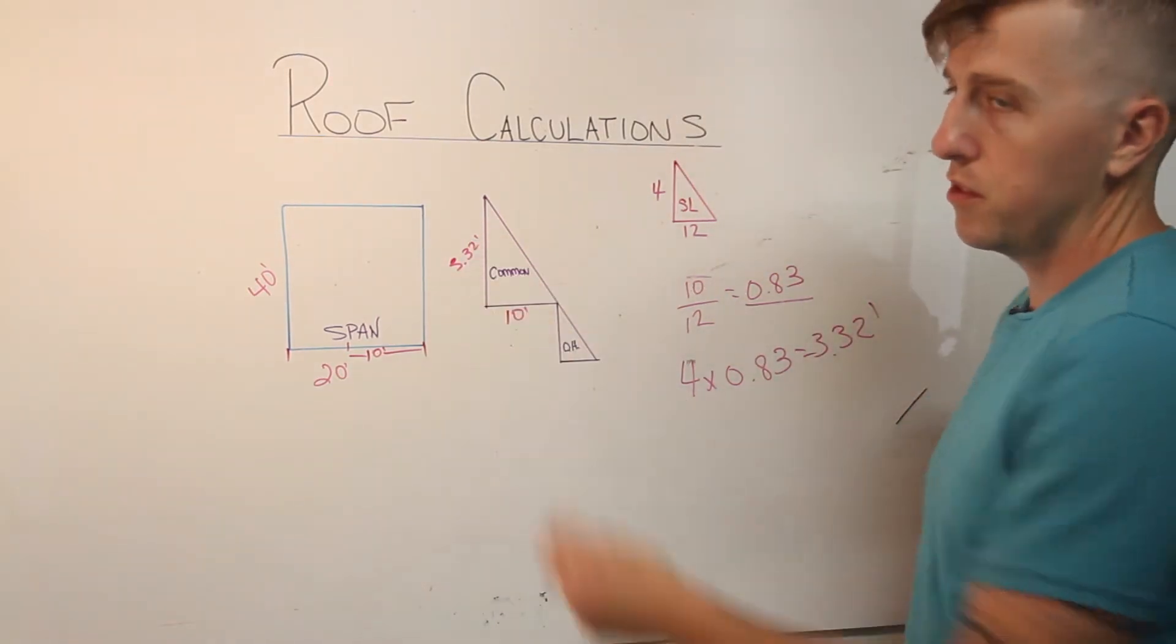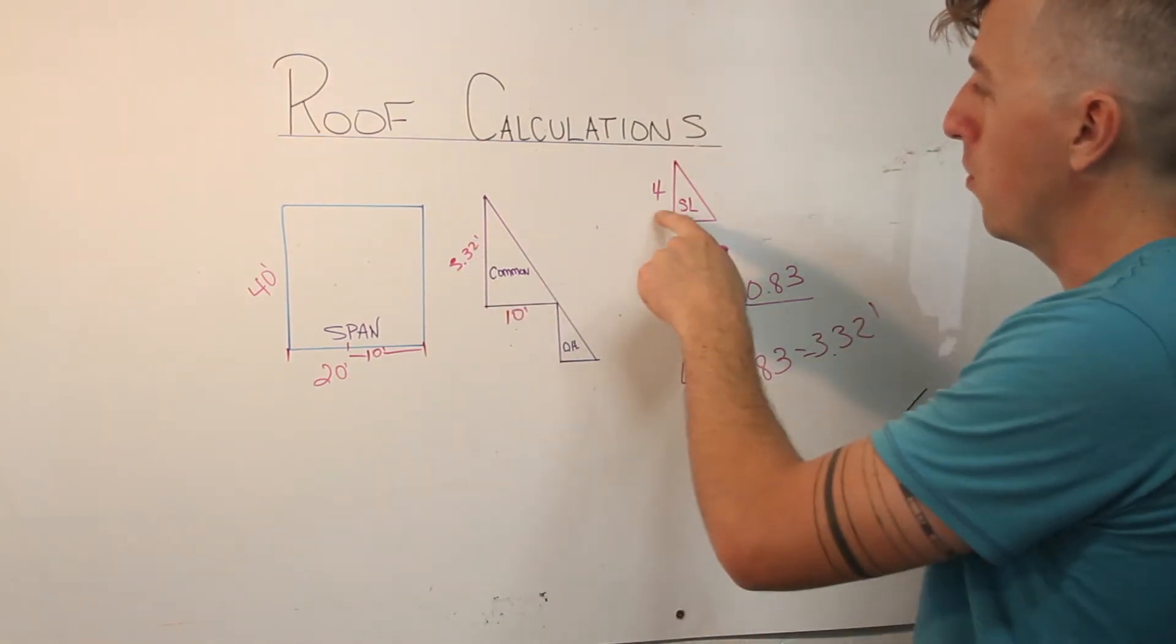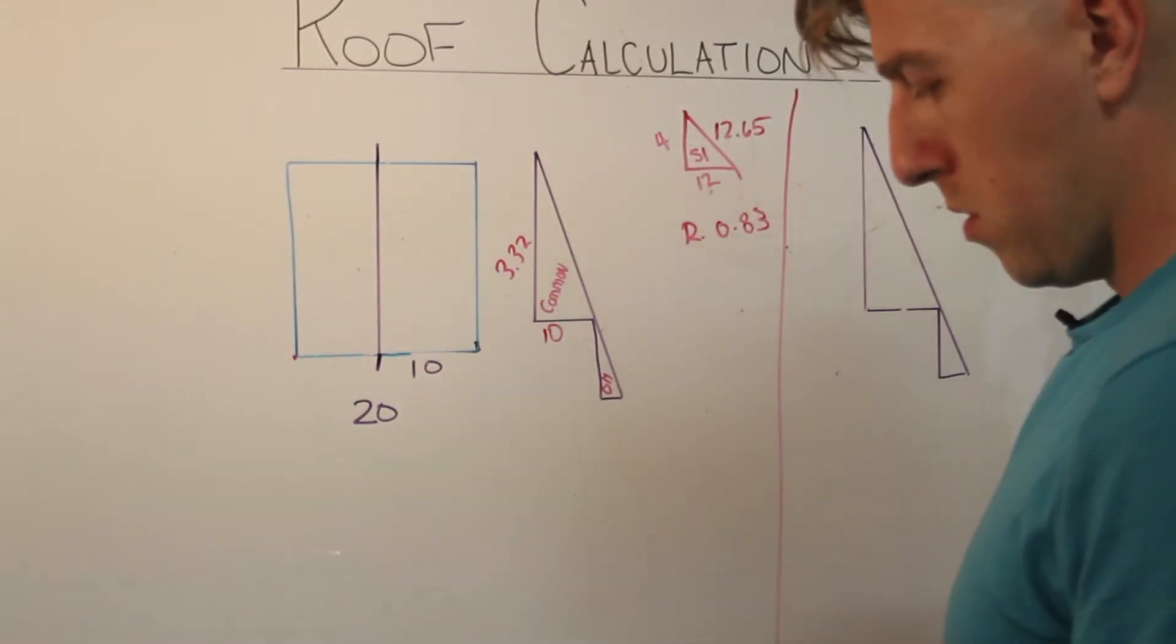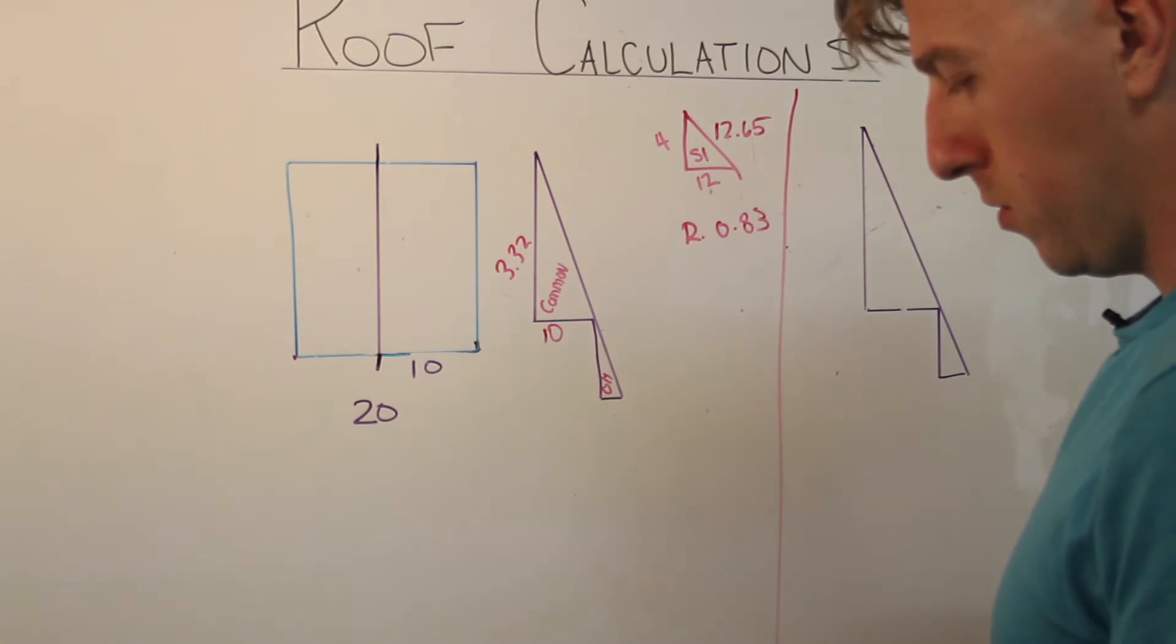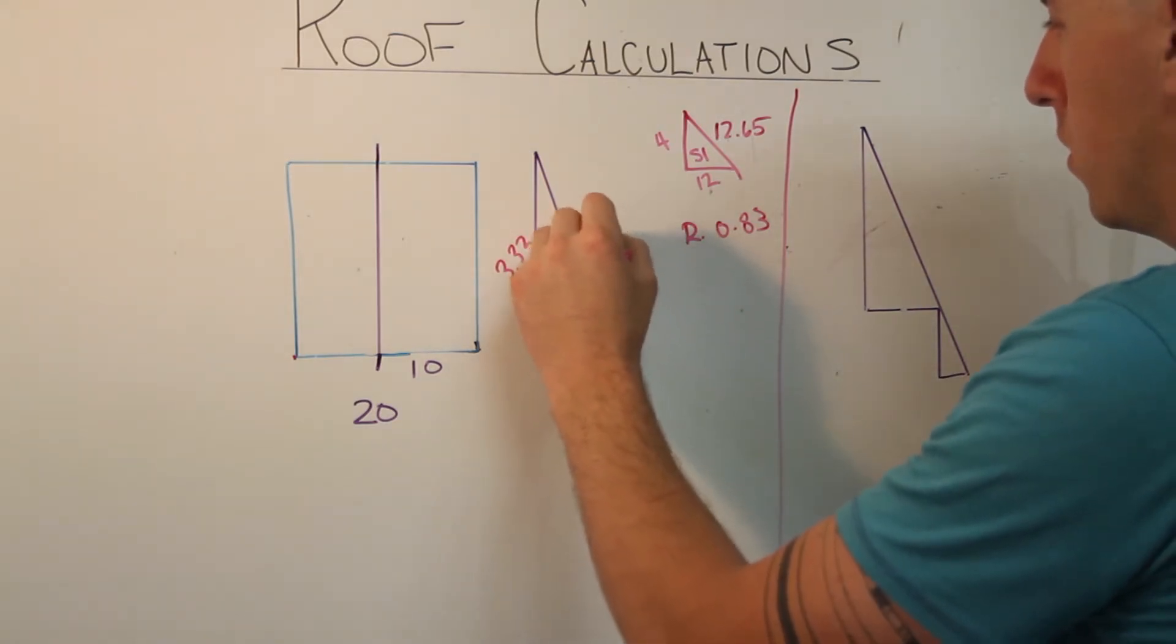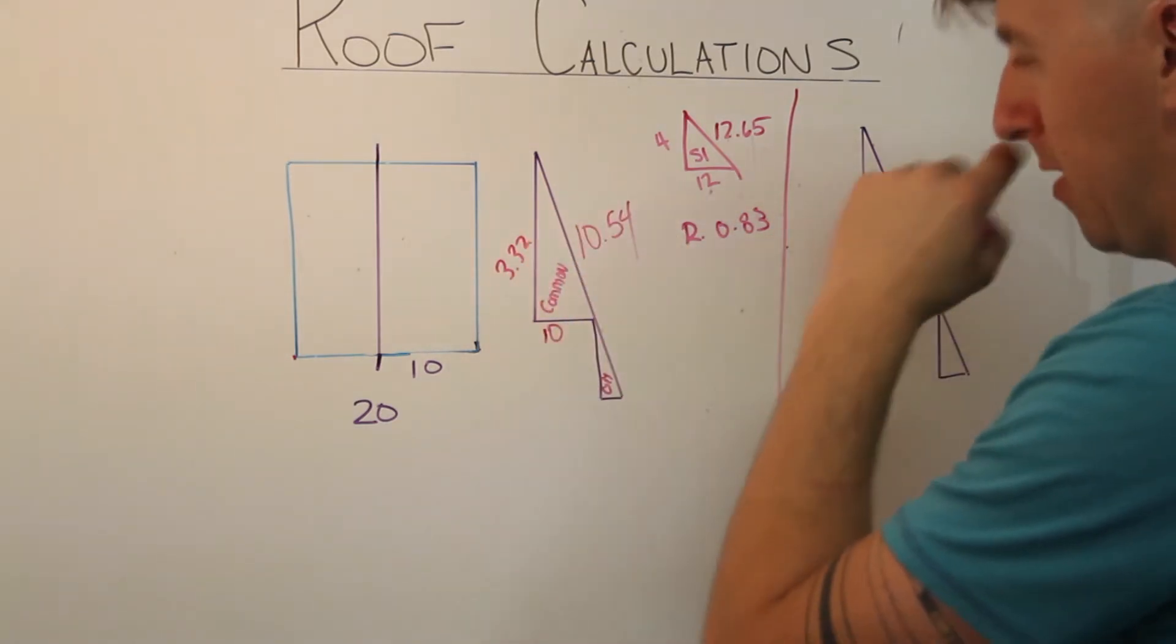You can solve this using Pythagoras theorem. You can solve this and you can have your run and then do ratio proportion, whichever you like. 3.32 squared plus 10 squared equals second function square root is 10.54 feet.